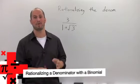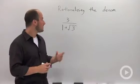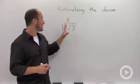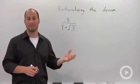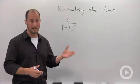Rationalizing the denominator with a binomial with two terms in the denominator. For this example we're looking at 3 over 1 plus root 3 and we want to rationalize the denominator. We want to get rid of that square root in the denominator.